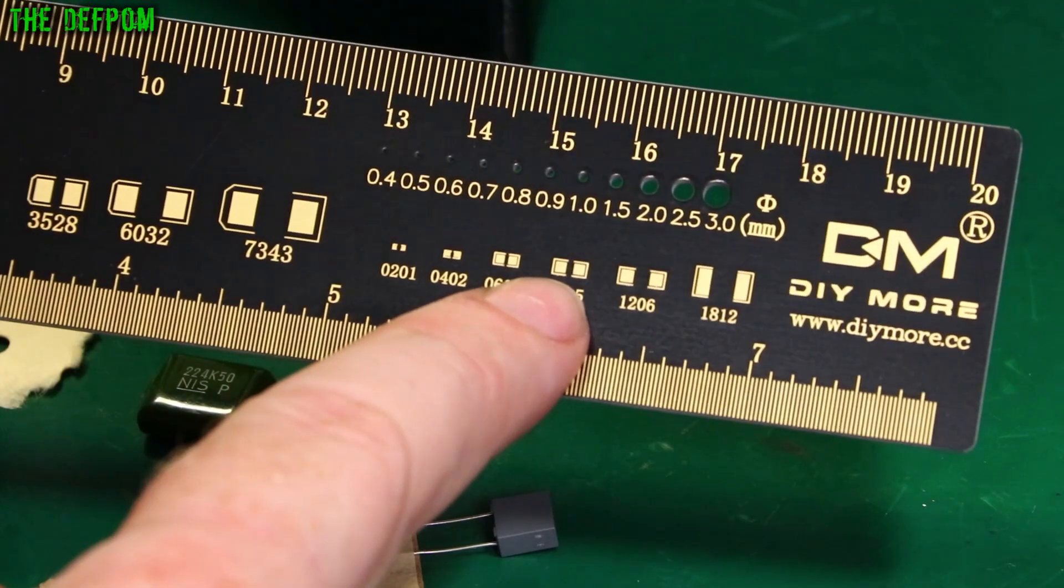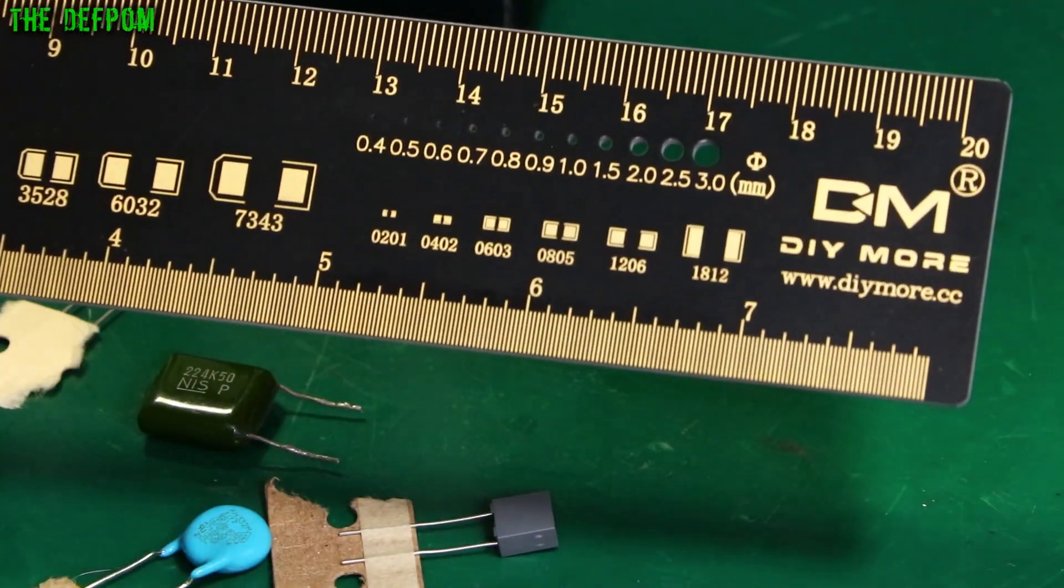0805 is easily solderable by hand. You can do that with soldering iron. Less than that you probably want to think about using paste, but we'll get to that later on.